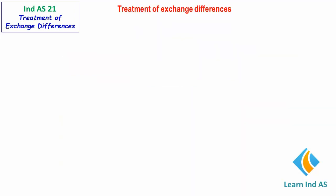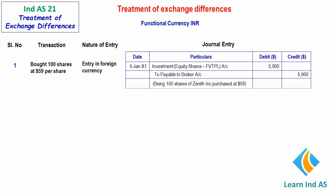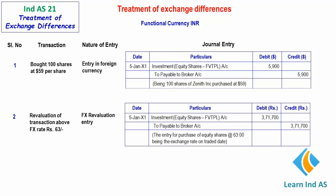Let us take an example of accounting for the exchange differences arising on account of purchase of equity shares designated in foreign currency. Assuming the functional currency is INR, 100 shares are bought at USD 59 per share. The initial recognition entry is shown in USD, and this entry in foreign currency is revalued in functional currency at the FX rate on the date of transaction, which is Rs. 63. The FX revaluation entry is shown here.